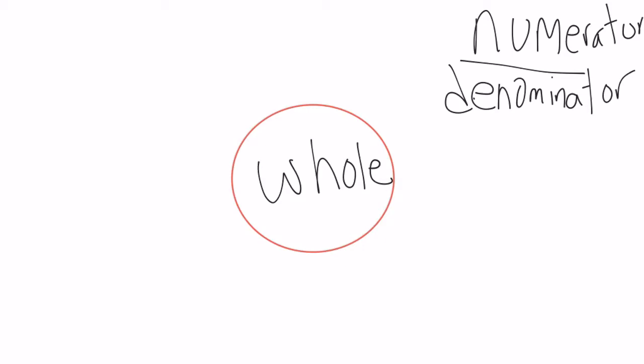The denominator is always going to tell us how much to split our whole up into. So if we had a fraction of 3 fifths, the whole is split up into 5 parts.